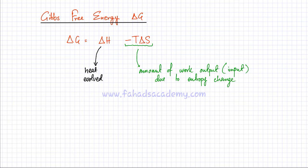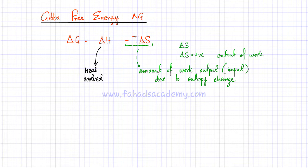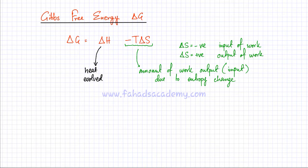As previously discussed, T delta S is the amount of work that is output or input due to entropy change. If delta S is positive, there would be a net output of work. If delta S is negative in a chemical reaction, there would be a net input of work. So whenever there is a chemical reaction, there are two ways a system is producing energy: one is the enthalpy change, and the other is the entropy change.